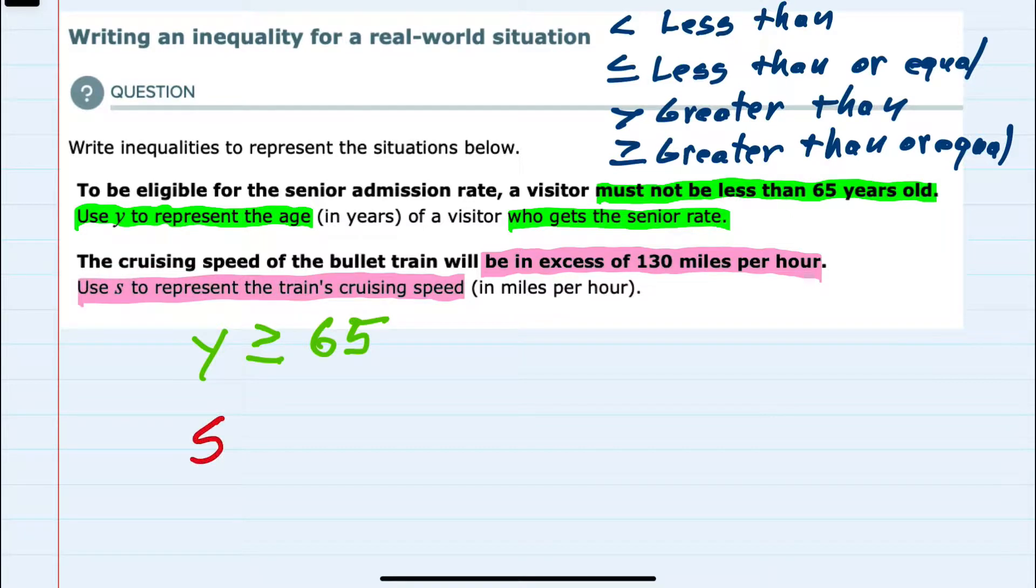So s will be in excess of 130 miles per hour. So it will be greater than 130. It can't be equal to 130 because that would not be in excess of 130.